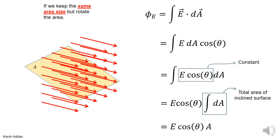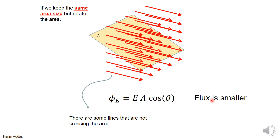This is the final result: flux equals E·A·cosθ. The flux is smaller because intuitively there are some electric field lines that are no longer going through the rotated area. The cosine term is the one that reflects that decrease in the electric flux.